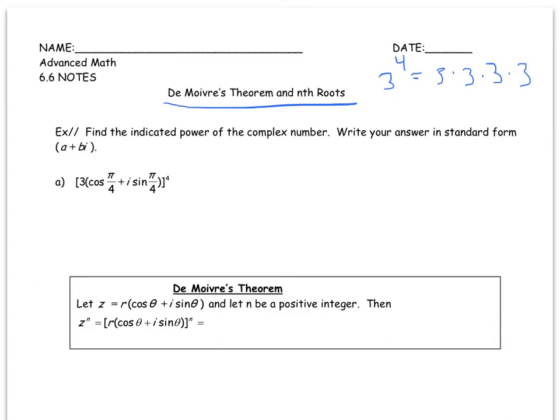So the first thing we should do is, I'm going to actually write this out just the way I wrote out 3 to the 4th as 3 times 3 times 3 times 3. I want to write this out as 3. And I think rather than rewrite this whole phrase again, I'm going to use an abbreviation that's really common.